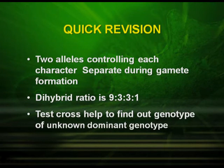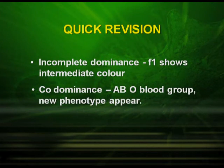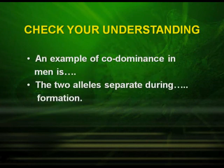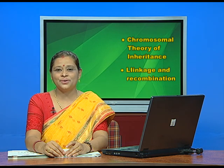Now let us have a quick revision. First, the two alleles controlling each character separate during gamete formation. Second, the dihybrid ratio is 9:3:3:1. Third, the test cross helps to find out the genotype of an unknown dominant phenotype. Fourth, incomplete dominance in the F1 shows an intermediate colour. Fifth, in co-dominance in the ABO blood group, a new phenotype appears. Try these to check your understanding: What is dihybrid cross? Is the dihybrid ratio 9:3:3:1 — true or false? What is the purpose of test cross? What is the phenotypic ratio in incomplete dominance? Give an example of co-dominance in humans. In the next episode, we will discuss Chromosomal Theory of Inheritance, Linkage and Recombination. Thank you.